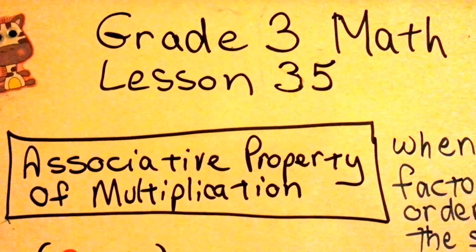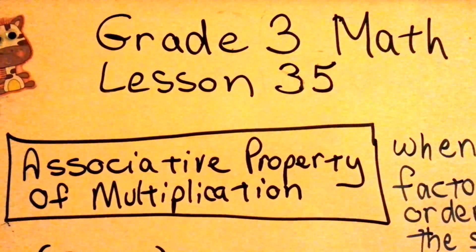Three Math, Lesson 35, The Associative Property of Multiplication.